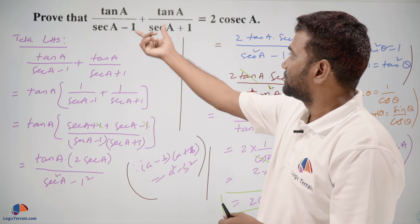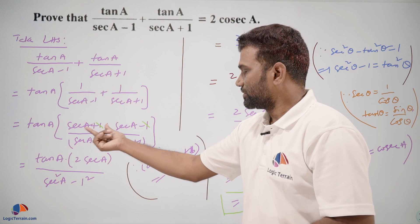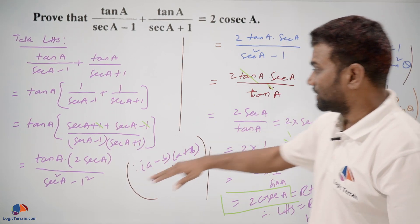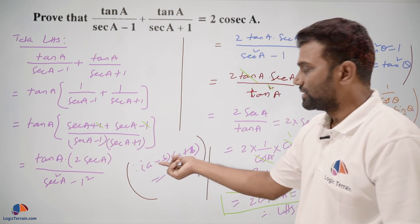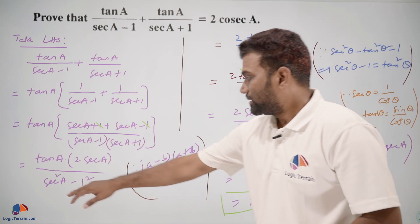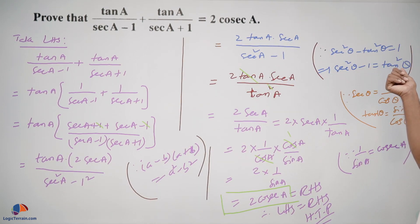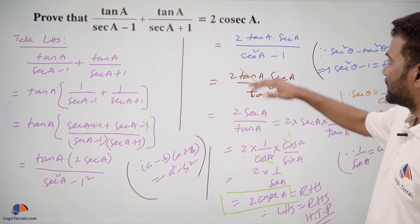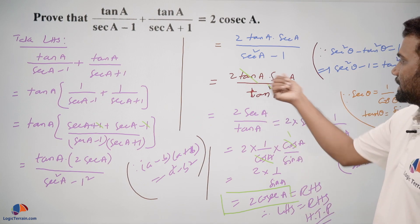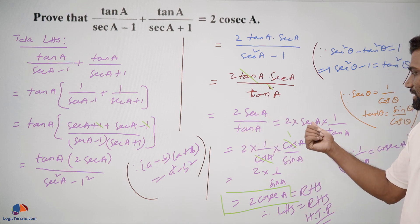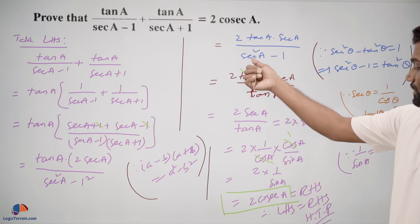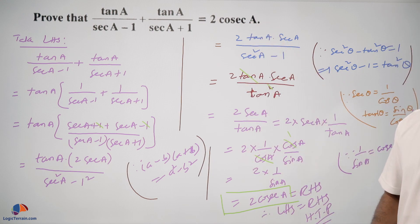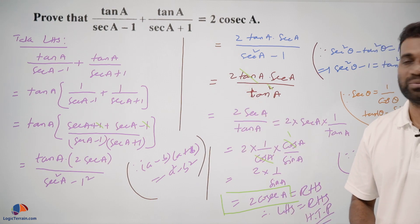Let's recap: we had to prove tan A upon (secant A minus 1) plus tan A upon (secant A plus 1) equals 2 cosecant A. We took LHS, factored out tan A, added the remaining terms by LCM to get tan A times 2 secant A upon (secant squared A minus 1). Using the identity secant squared A minus 1 equals tan squared A, we cancelled one tan A to get 2 secant A upon tan A. Then using secant A equals 1 upon cos A and tan A equals sin A upon cos A, the cos A cancelled, leaving 2 upon sin A, which is 2 cosecant A — our required RHS.